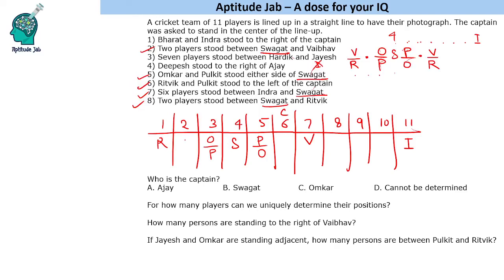There are seven players between Hardik and Jayesh. Looking at the remaining fixed pairs, counting positions 1 through 11, the only available pair with exactly seven players between them fits these two positions. So Hardik and Jayesh occupy those two spots.